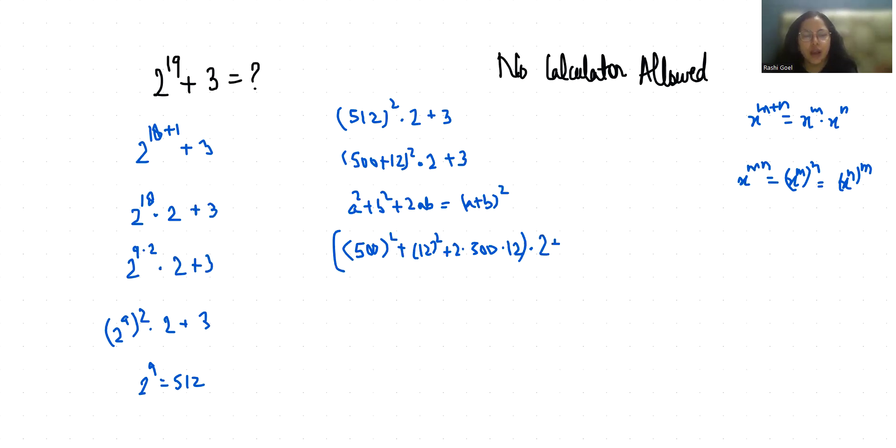250,000 plus 144 plus 12,000, which equals 262,144.